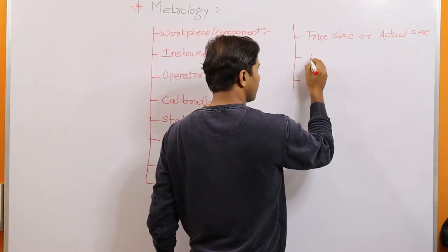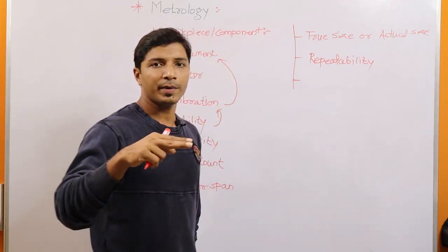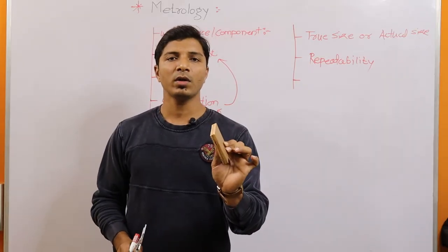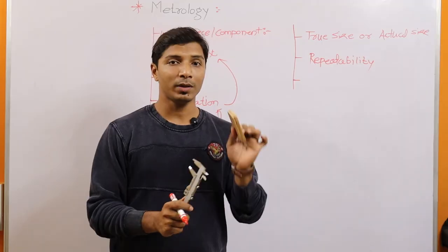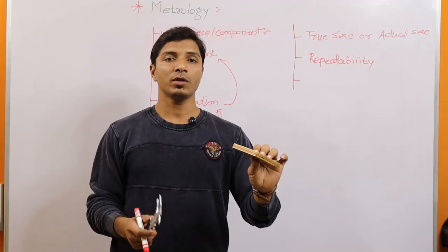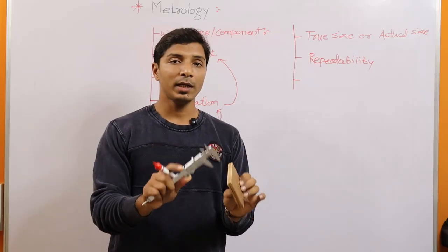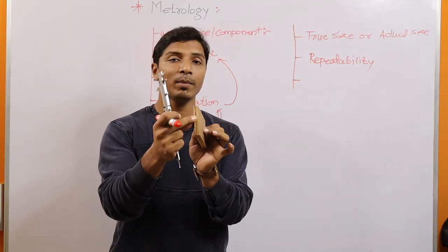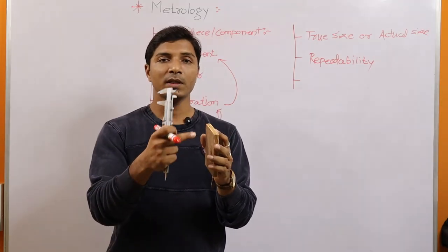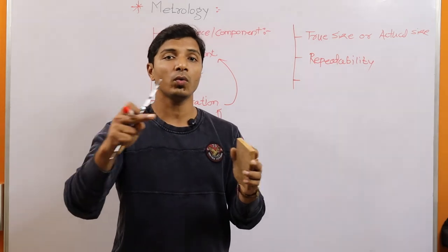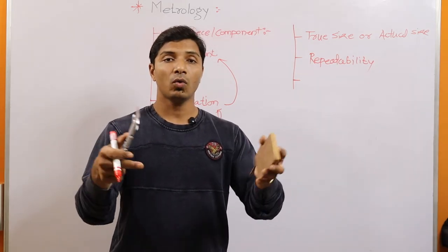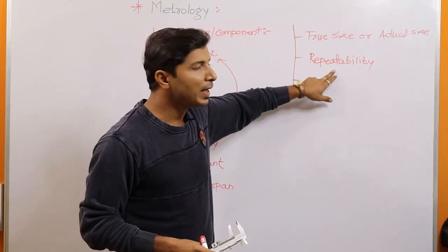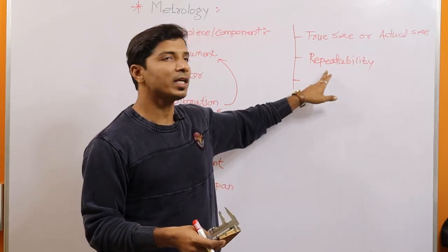The next parameter is repeatability. To understand it, assign a thousand components to a single operator and have them measure all components with a single instrument, then observe whether the results are close together. For example, if this side is 10 mm and measurements come out as 10.001, 10.002, 10.003 — all close together — then the instrument has repeatability, meaning the ability to repeat results with closeness.